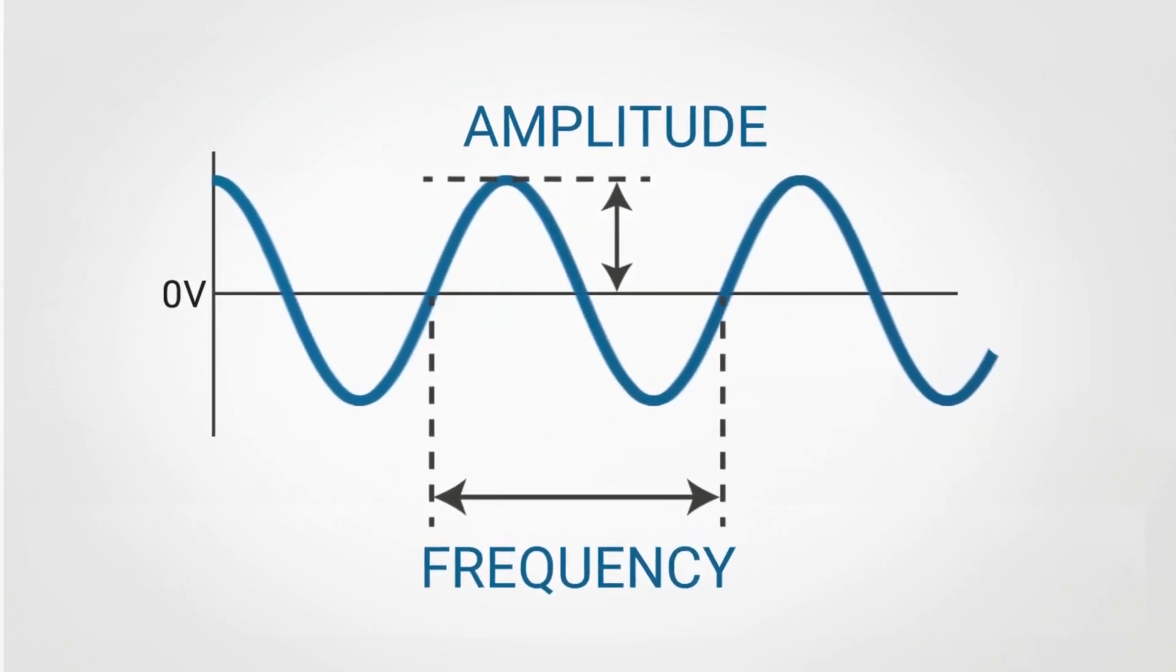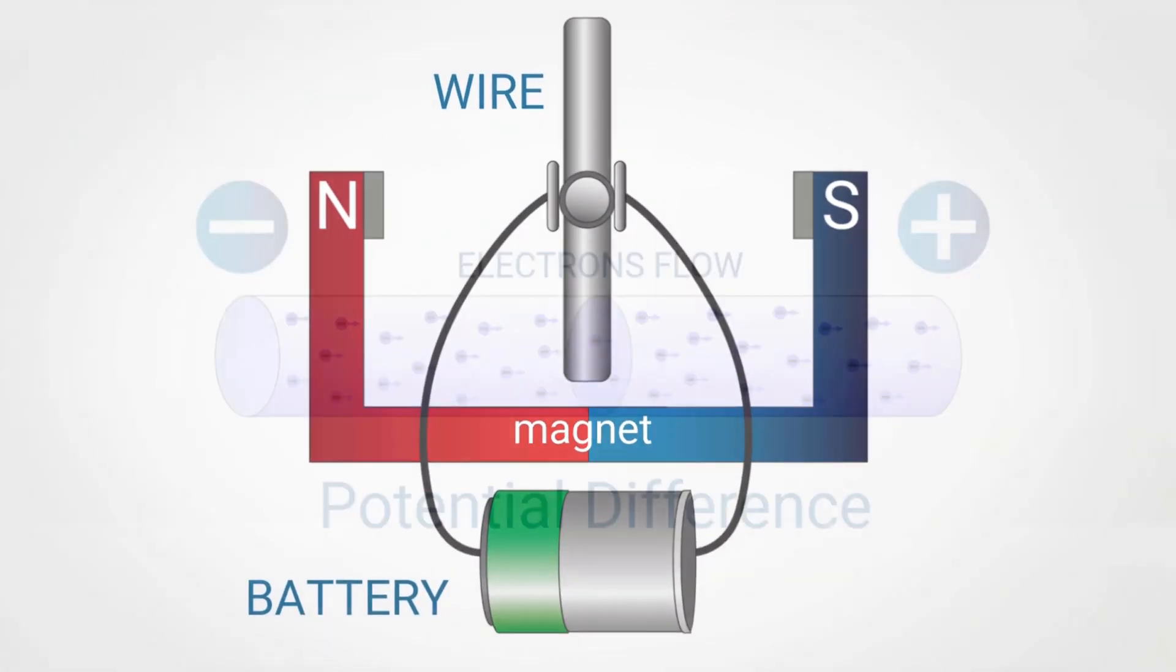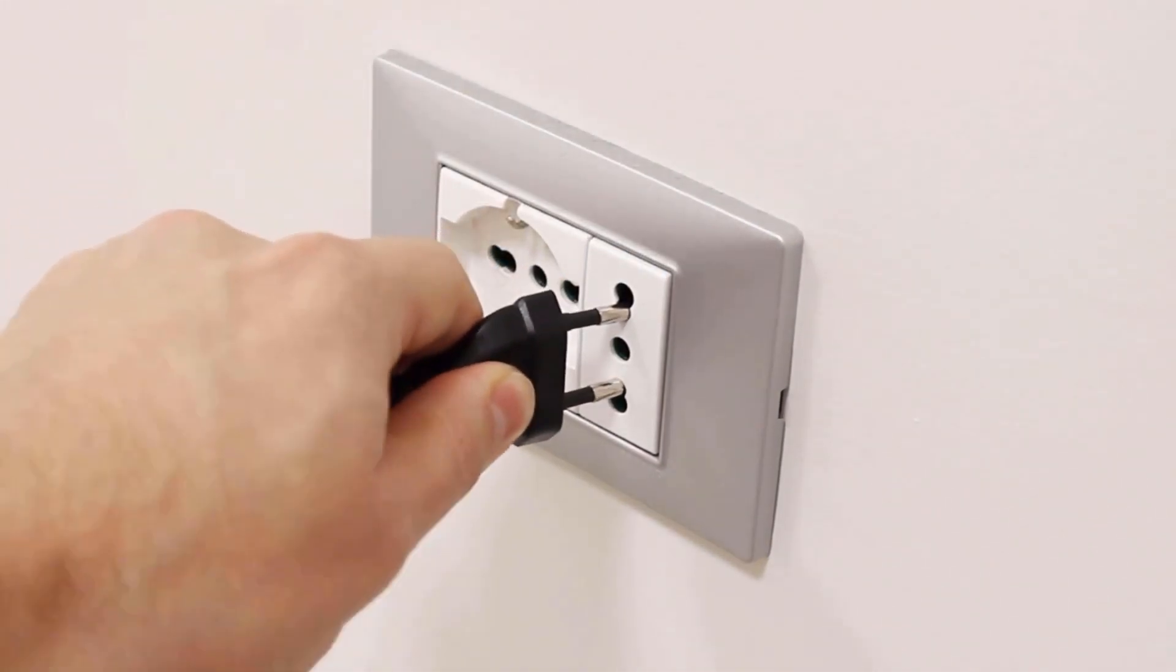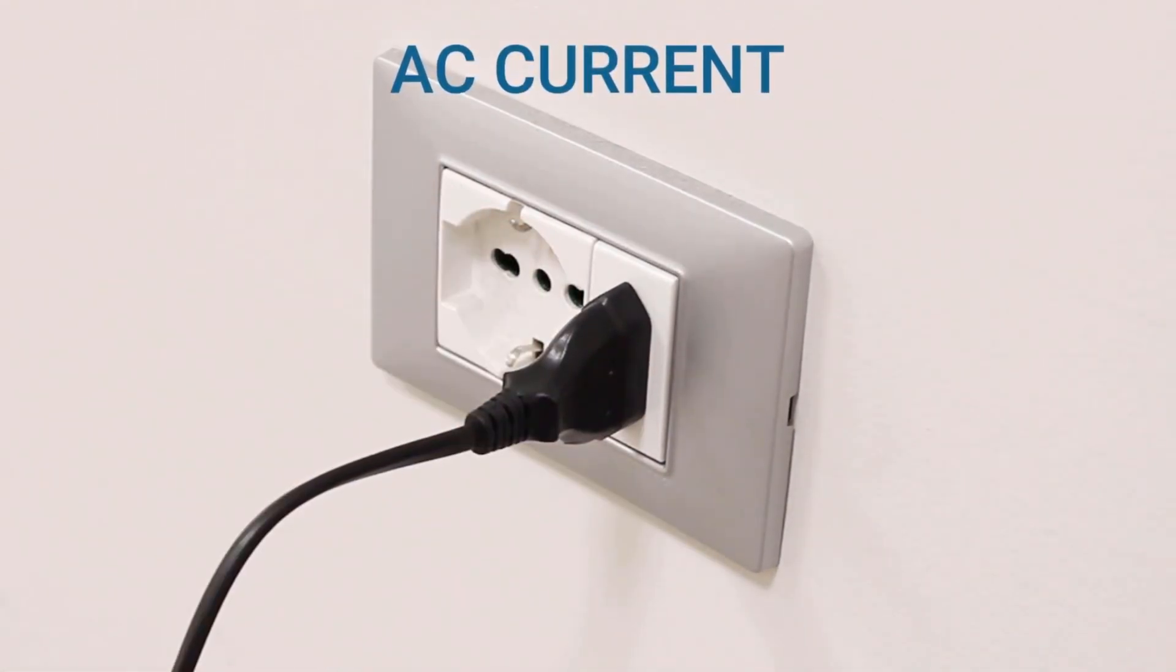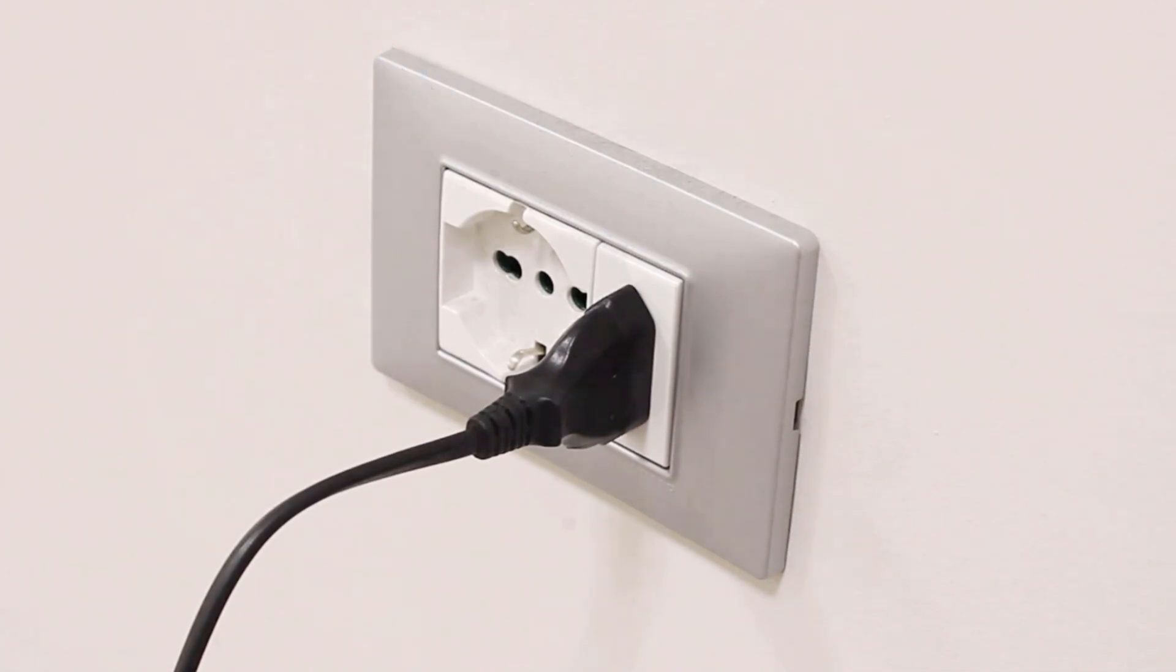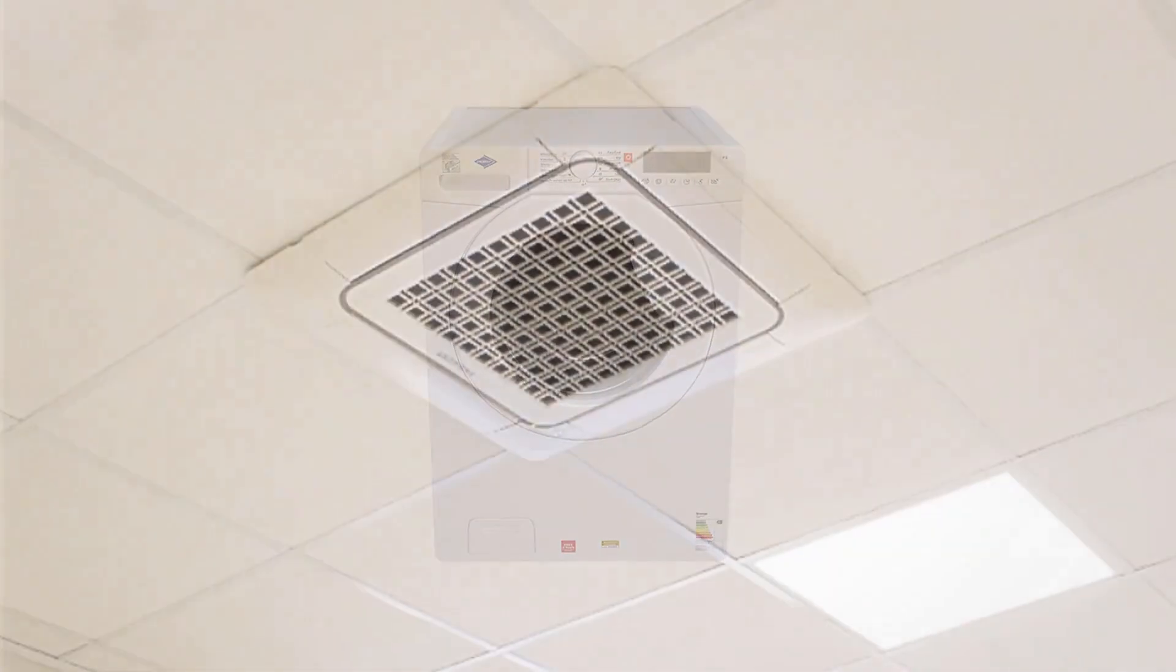As we've already explained in our previous video on the history and operation of the electric motor, the common electrical socket in our homes provides us with alternating current. It is generally used to power large electrical devices such as home appliances.